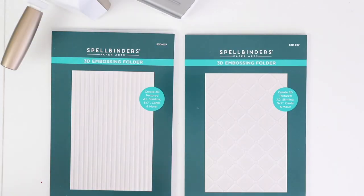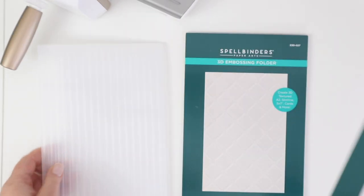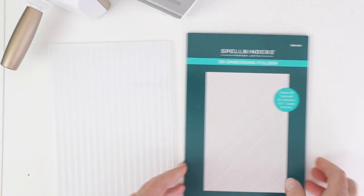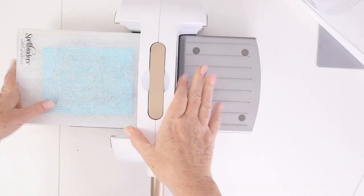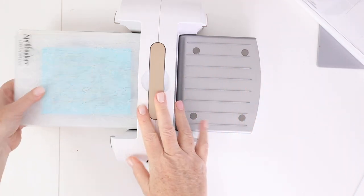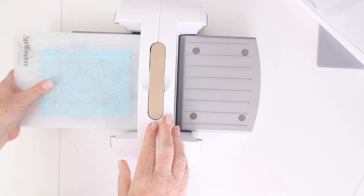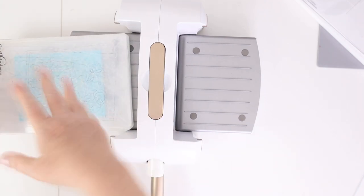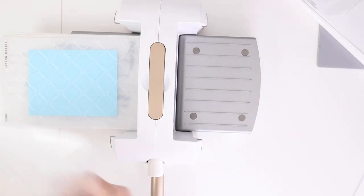Here are two newer embossing folders, 3D embossing folders from Spellbinders. This is corrugated and then on the right hand side I have tufted, and they have a bunch of fun new 3D embossing folders.